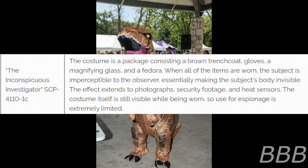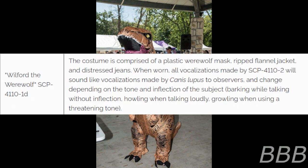The Inconspicuous Investigator — SCP-4110-1-C: The costume is a package consisting of a brown trench coat, gloves, a magnifying glass, and a fedora. When all items are worn, the subject is imperceptible to observers, essentially making the subject's body invisible. The effect extends to photographs, security footage, and heat sensors. The costume itself remains visible while being worn, so its use for espionage is extremely limited. Welford the Werewolf — SCP-4110-1-D: The costume is comprised of a plastic werewolf mask, a ripped flannel jacket, and distressed jeans. When worn, all vocalizations made by SCP-4110-2 sound like those made by Canis lupus.